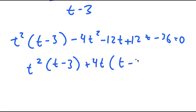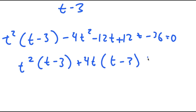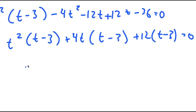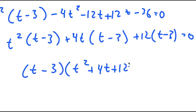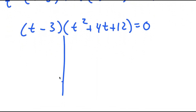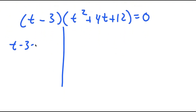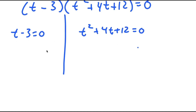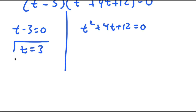I get t minus 3 times t squared plus 4t, and I can factor out 12, so I get 12 times t minus 3. Now from here, if I factor out t minus 3 from all of this, I get t minus 3 times t squared plus 4t plus 12. Meaning I have two equations: t minus 3 equals 0, and t squared plus 4t plus 12 equals 0.